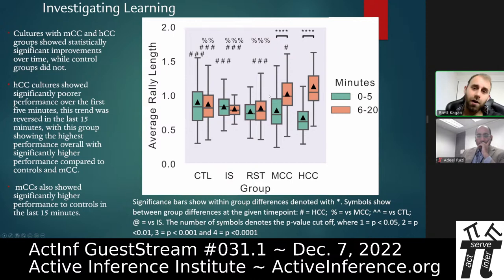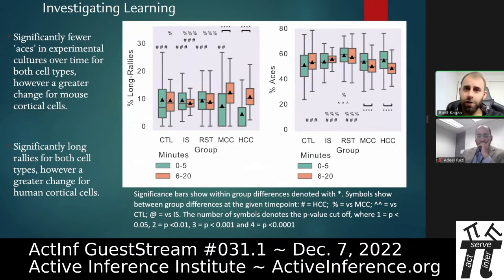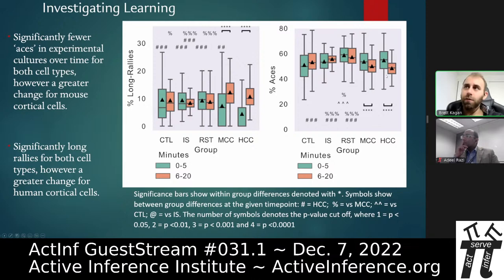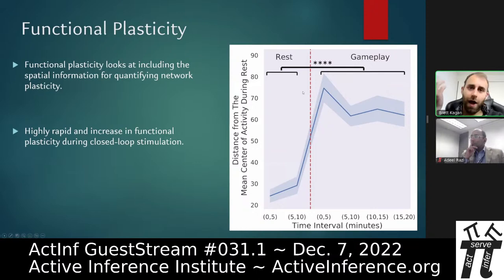These results were replicated across multiple measures. Percentage of long rallies — hitting the ball four or more times in a row — increased significantly over time for mouse and human cells, but not for controls. Likewise, aces — where the ball is missed without being hit even once — decreased statistically significantly for mouse and human cortical cells over time, but not for controls. Neural cells are adaptive, and seeing this in a dish is compelling.